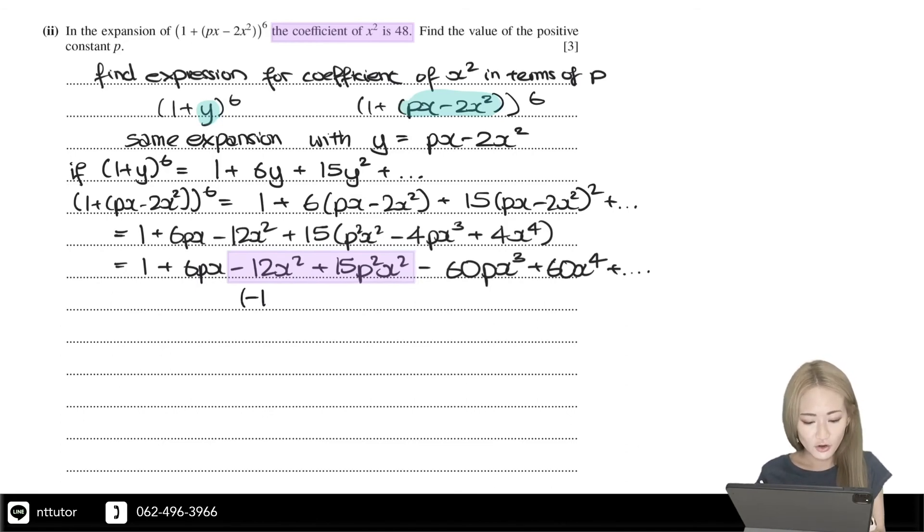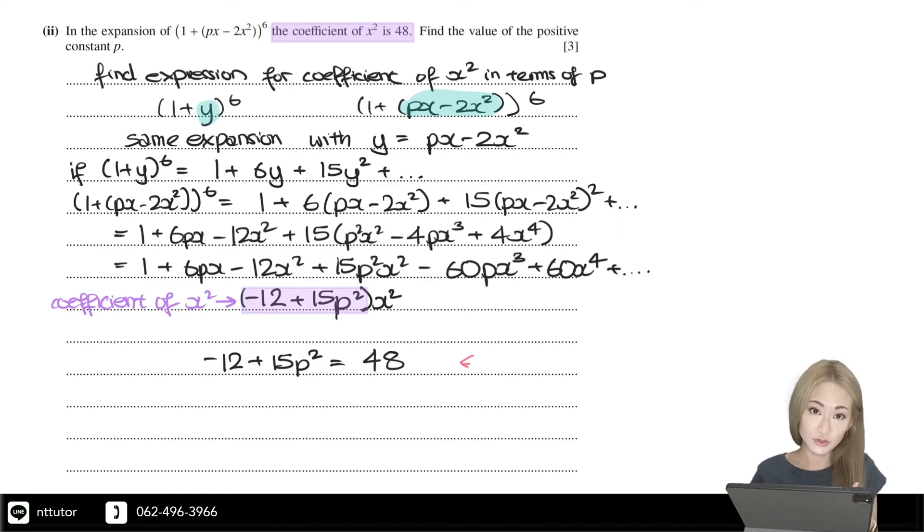So -12 + 15p² is the coefficient of x². We know that the coefficient equals 48, so we can write -12 + 15p² = 48, which we can use to solve for p.